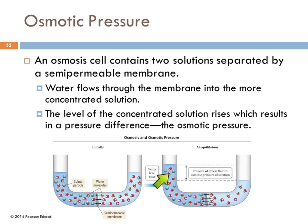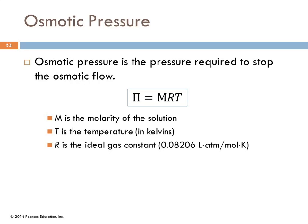The osmotic pressure is the pressure required to stop the osmotic flow—it corresponds to the height difference in the U-tube. The equation is π = MRT, where π is osmotic pressure, M is the molarity of the solution, R is the ideal gas constant, and T is temperature in Kelvins.